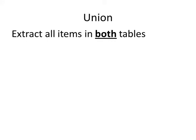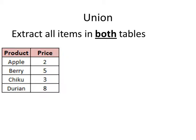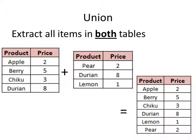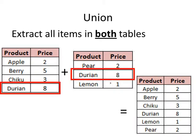Now let's take a look at the first operator under the set operations. The union operator essentially performs an extraction on all items in both tables. Given an example of two tables, if we perform a union operation — similar to a plus operation in linear algebra — we will get an answer that looks like the right table. We will combine all the items from both tables together, but taking note that the common items are not duplicated.